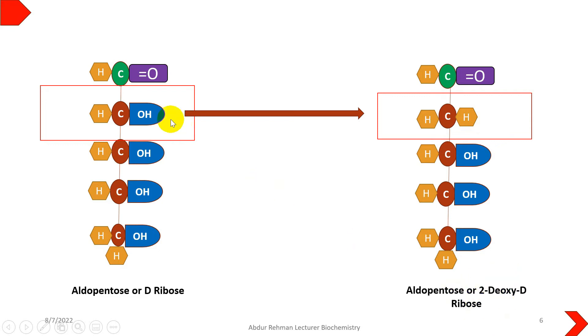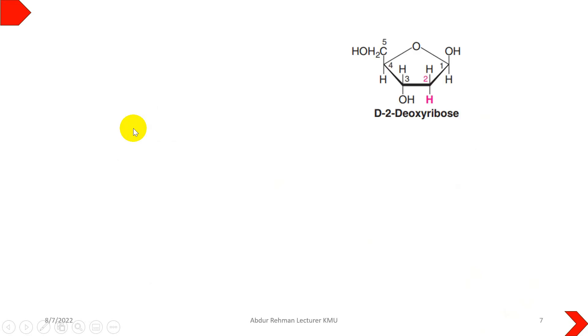While ribose sugar has a hydroxyl group at carbon number 2 position, the reason for this difference is that DNA stores genetic information for a long time.